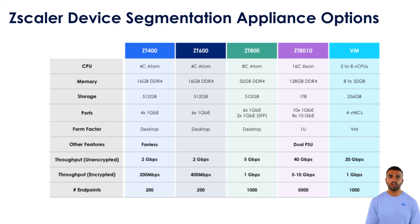Zscaler offers a range of Zero Trust Branch appliances to fit different deployment sizes and performance needs, including the ZT400, ZT600, ZT800, ZT8010, and Virtual Machine. These appliances vary by CPU from 4-core to 16-core, memory from 16 to 128GB, storage from 256GB to 1TB, and different port options. Throughput capabilities differ, with unencrypted throughput ranging from 2 to 40Gbps and encrypted throughput up to 10Gbps, supporting from 200 to 5,000 endpoints. Form factors include fanless 1U rack mount and VM instances, catering to diverse physical and virtual deployment environments, allowing organizations to choose the right fit based on scale, performance, and operational preferences.